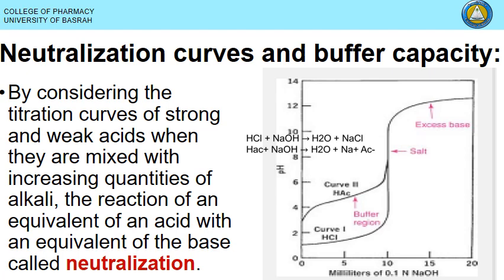The case of acetic acid is different — the pH increase is not as sharp as with HCl. In the buffering region, NaOH reacts with acetic acid to form sodium acetate, creating a buffer system that resists further pH changes. Only after the buffer capacity is exhausted does a rapid increase occur due to excess NaOH.